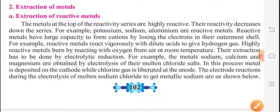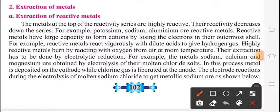The metals at the top of the reactivity series are highly reactive. As we know, whatever is at the top level, they are highly reactive. Their reactivity decreases down the series. As we have seen in the table, the reactivity series shows that as we go down, the reactivity also decreases.